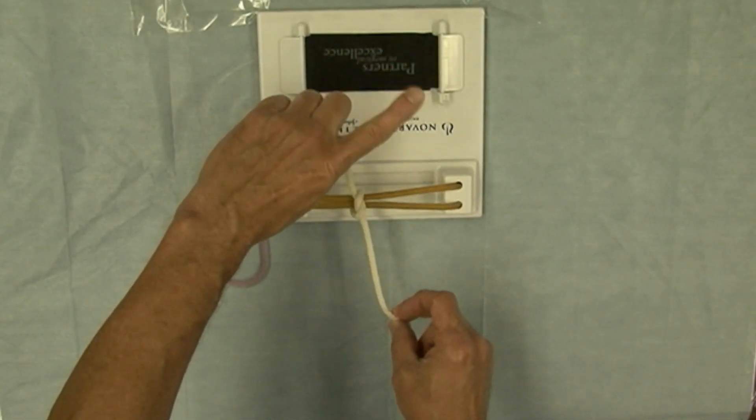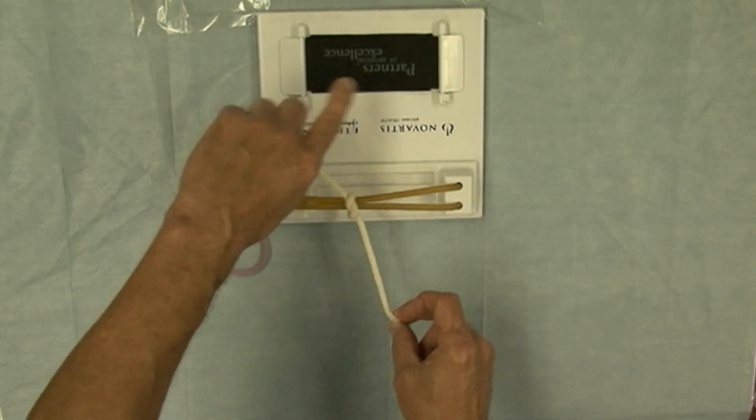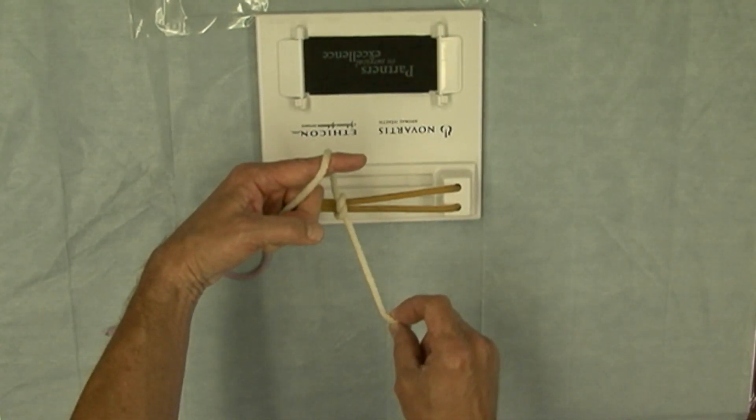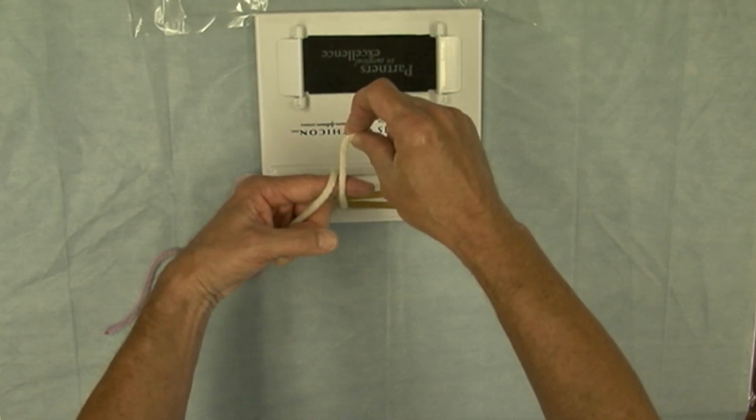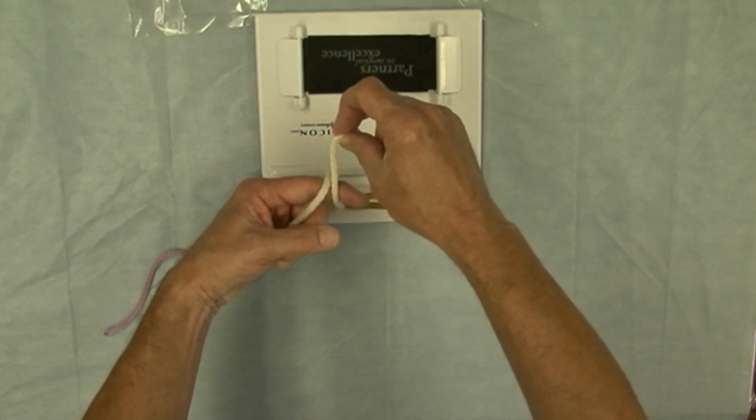Next, I'm going to put my index finger out there deliberately, go around, create half a loop, use my right hand to bring the suture through to complete the loop.